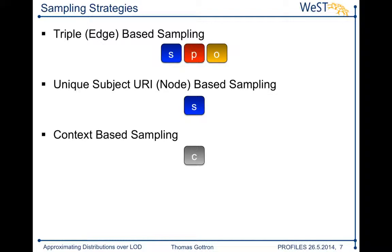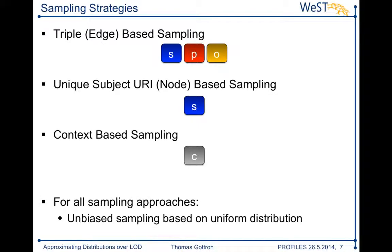In all the work I have done for this paper, I always assume unbiased sampling based on a uniform distribution. For example, when dealing with context, I pick each context — each data source — equally likely in my sample, independent of its size or importance.